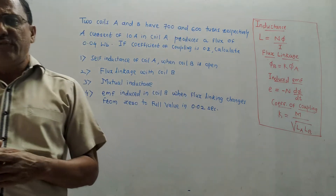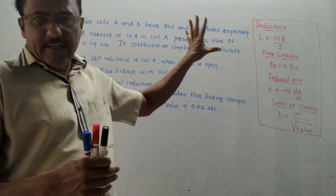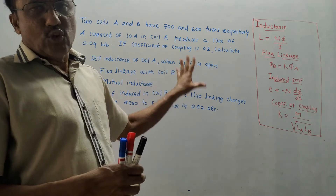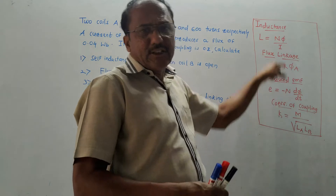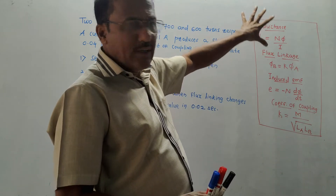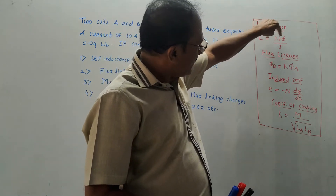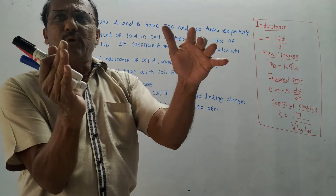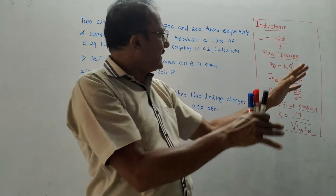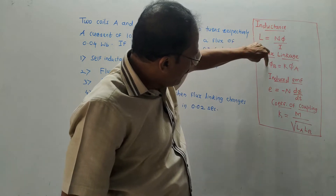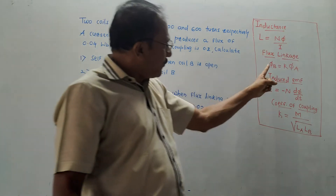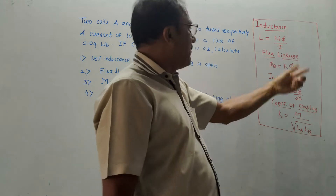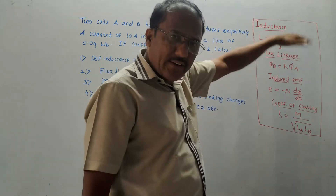Dear students, if you haven't yet watched earlier videos related to this unit, do watch those videos — links are in the description box. We are solving numericals on mutual inductance. I have made a separate list of formulae — only this list is sufficient to solve any numerical. L is inductance, N is number of turns, phi is flux, I is current. Flux linkage means flux lines produced in coil A get linked in coil B. Flux linkage in coil B is phi_B = K × phi_A, where K is the coefficient of coupling.